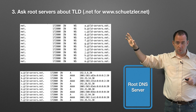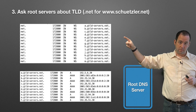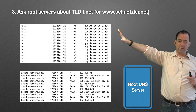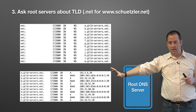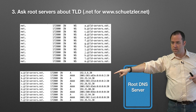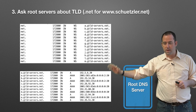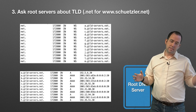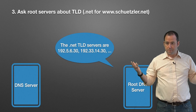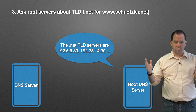Also in that root zone file is what these names resolve to, because you wouldn't want to be told to resolve one name just to resolve another. So we get a.gtldservers.net along with its IP address — 192.5.6.30, 192.33.14.30, etc. That whole list comes back to our name server, and the name server now knows. The root server responds saying the .NET top level domain servers are here — here are their IP addresses, here's who you ask next.